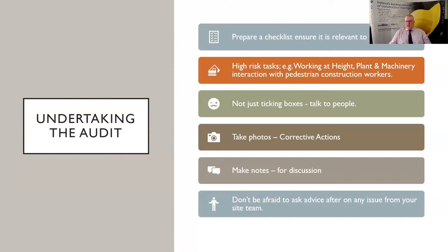Undertaking the audit. Preparing a checklist relevant to the task and to the site is something your safety team should be able to do, tailored and specific to what's going on. Have a generic box at the end where additional information can be put in place around hazards found outside of normal work practice — it could be related to subcontractors on site.